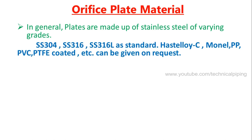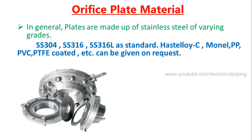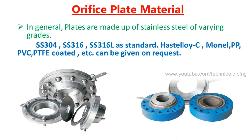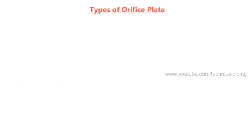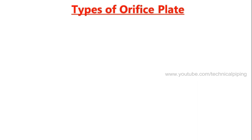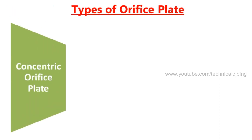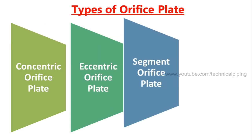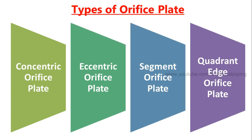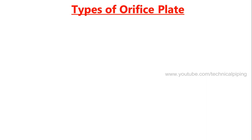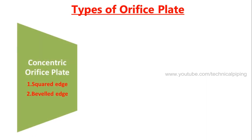There are different types of orifice plates used for different fluids and processes. The major types are: number one, the concentric orifice plate; number two, the eccentric orifice plate; number three, the segment orifice plate; and number four, the quadrant edge orifice plate. In further slides, you can see pictures of each orifice plate and their applications.